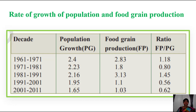In 1971 to 1981, population growth was 2.23 and food production was 1.8. The ratio of food production to population growth is 0.80 — meaning population growth was high while food grain production was less.